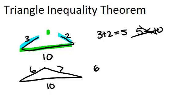So because 6 plus 7 equals 13, and 13 is greater than 10, this is a triangle.